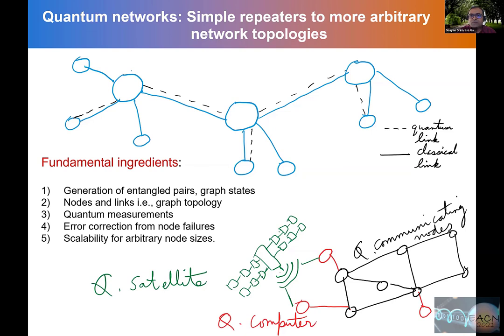These nodes can also be connected to quantum computers, possibly with superconducting qubits, and you can have a quantum satellite. That's a true picture of a quantum internet system, which is in a broad sense a quantum network. We are interested in how entanglement can help in this process. The fundamental ingredients are generation of entanglement pairs — graph states in this case — nodes and links, graph topology, quantum measurements, resilience to node failures requiring error correction, stabilizer codes, and scalability for arbitrary node code sizes.